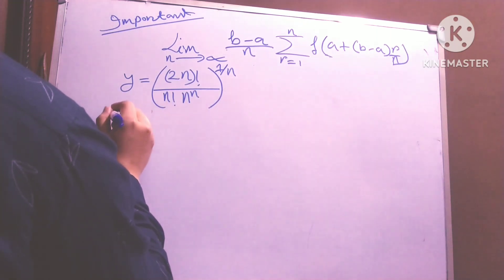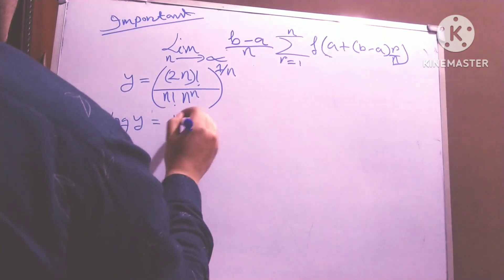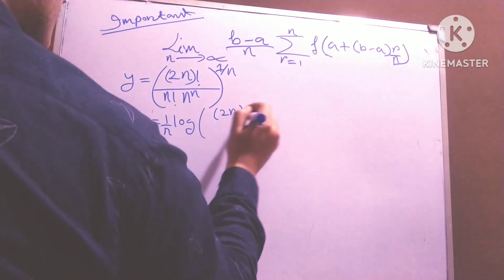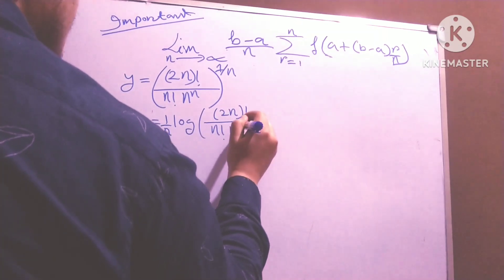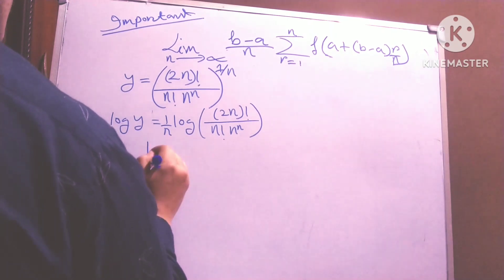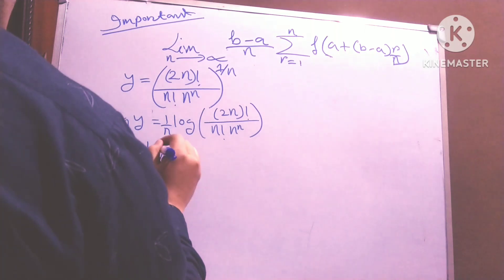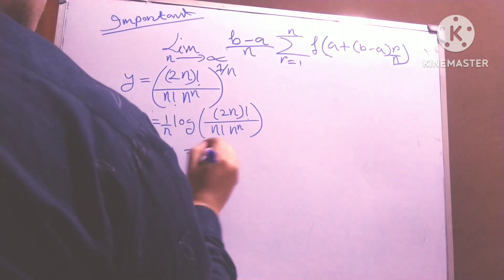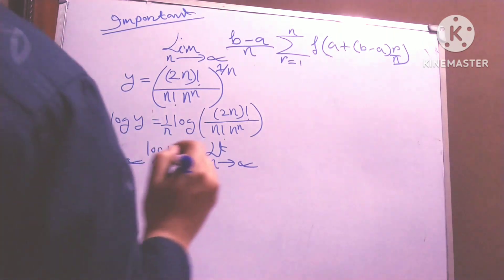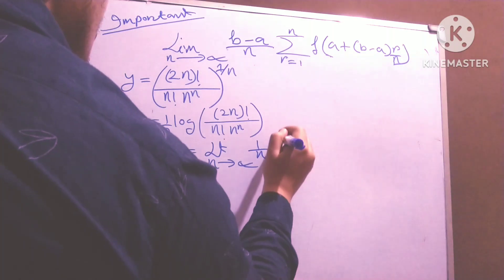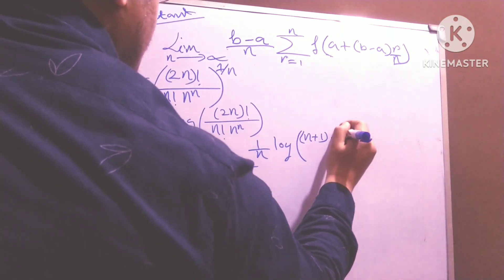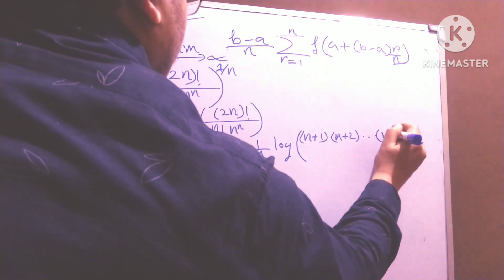So I just take log on both sides. So I take log 1 by n of log of 2n factorial divided by n factorial times n to the power n. Taking limit n to infinity, log 1 equals limit n to infinity of 1 by n times log of (n+1)(n+2)...(n+n).